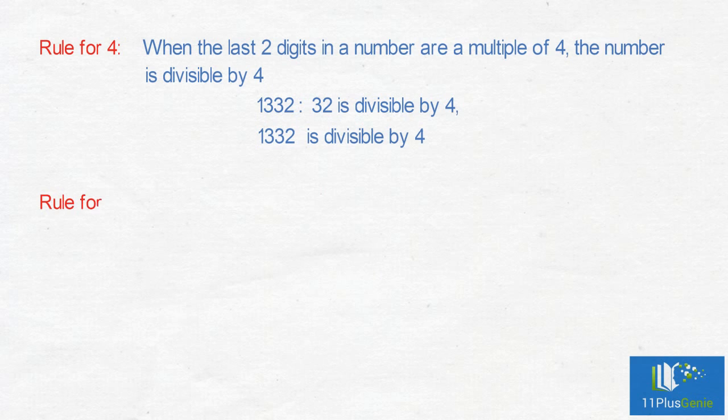Rule for 5: When the last digit in a number is 0 or 5, the number is divisible by 5.